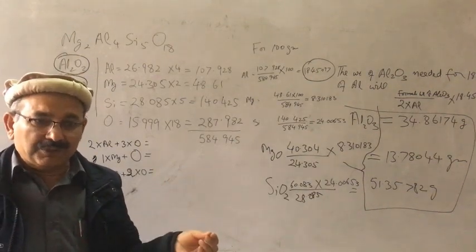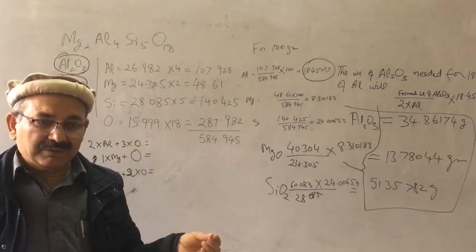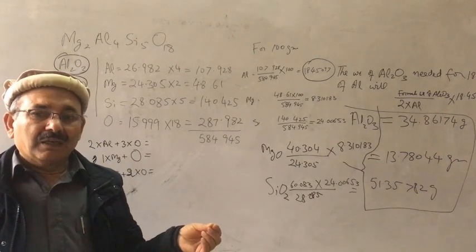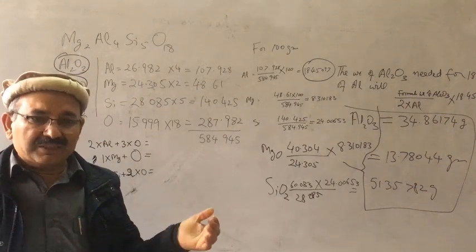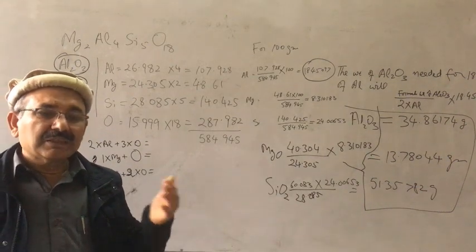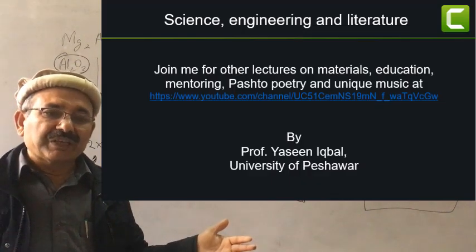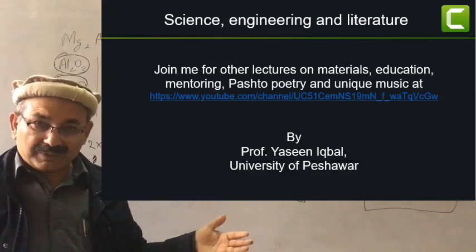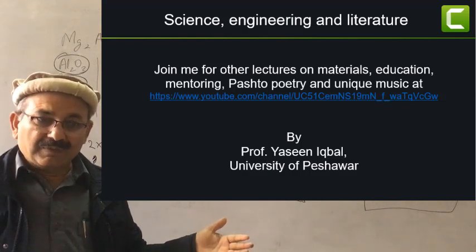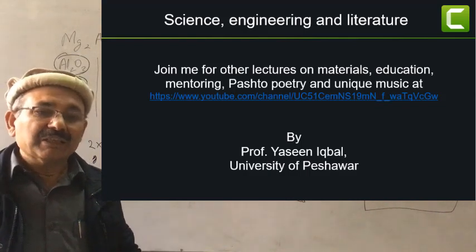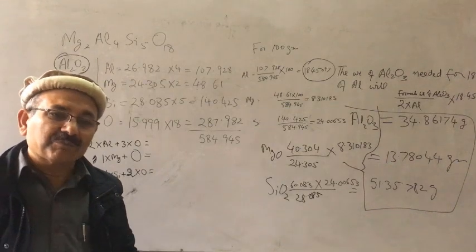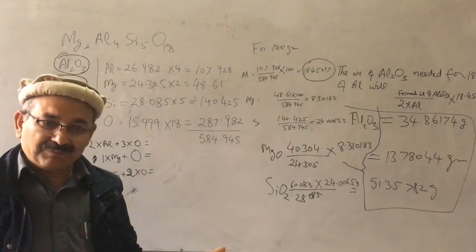The simple requirements for this procedure are: you have a formula in your mind — write it down. Then find the atomic weights of each and every element present. Then find the formula weights of the raw materials available, such as Al₂O₃, and proceed with the calculation.